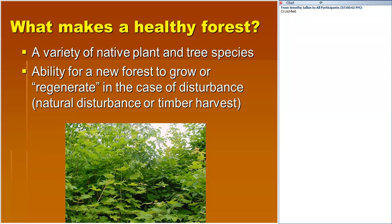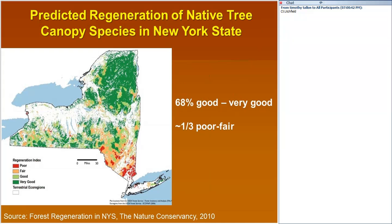First of all, what makes a healthy forest? A healthy forest should include a variety of native plant and tree species, and also the ability for a new forest to grow or regenerate if you have a disturbance — say a natural disturbance like an ice storm, a wind throw, or following a timber harvest. There are a number of factors impacting northeastern forests today that we wanted to discuss in some detail.